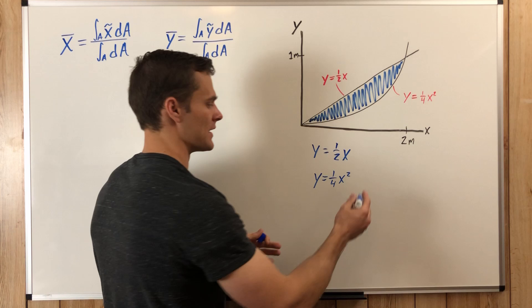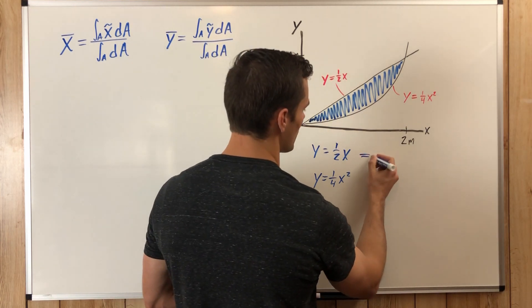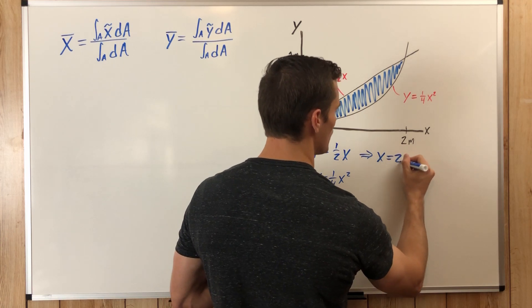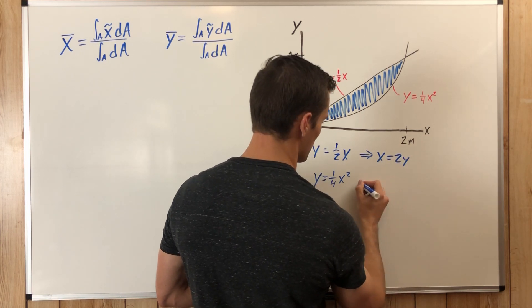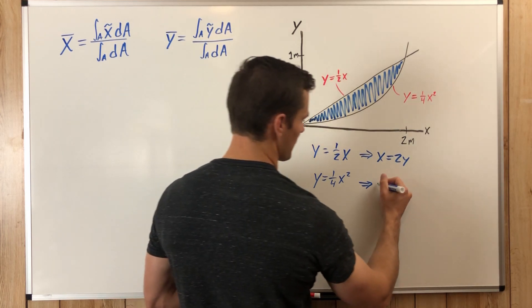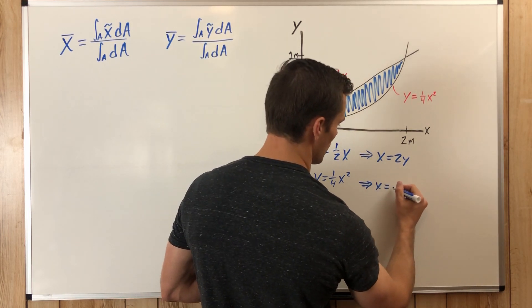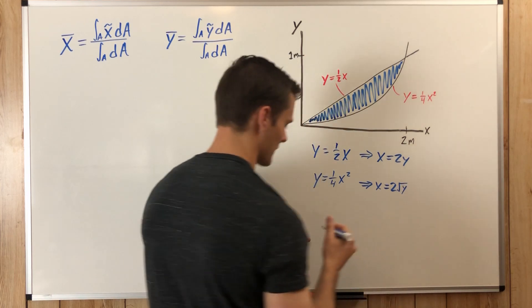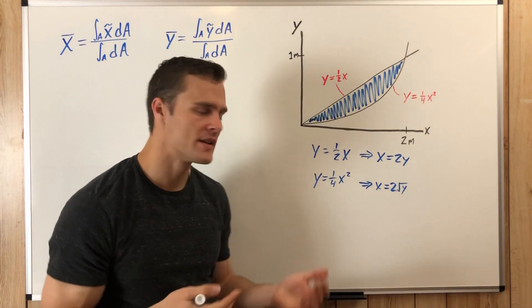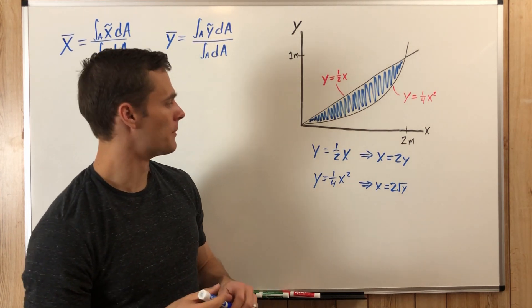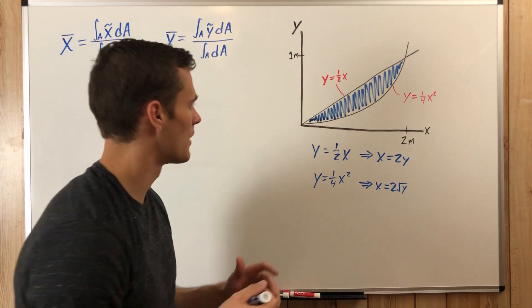We need to solve these equations for X. So this would end up being X equals to Y, and this one would be X equals to square root of Y. And now maybe in the end this would be easier, I don't know, I haven't tried it both ways, but there's those two equations.